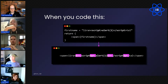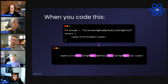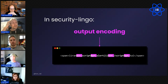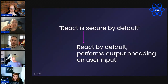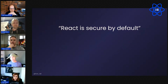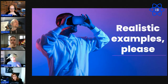This is output encoding — a secure way to put information into the DOM without it evaluating as real-time code. When we say React is secure by default, we mean React by default performs output encoding on user input. But it's 'mostly' secure — so what do we actually need to worry about, and what do we still need to protect? Let's do some realistic examples and live coding.